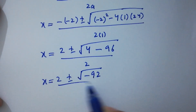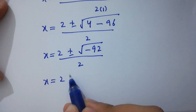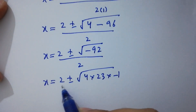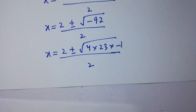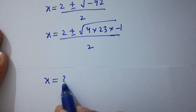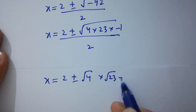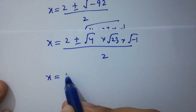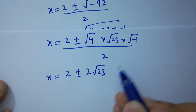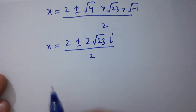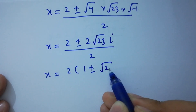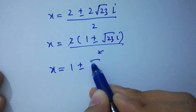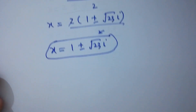We have 2 plus or minus square root of minus 92 over 2. This simplifies as square root of minus 92 equals square root of 4 times 23 times minus 1. So x equals 2 plus or minus square root of 4 times square root of 23 times square root of minus 1 over 2. Since square root of 4 is 2 and square root of minus 1 is i, we get x equal to 2 plus or minus 2 times square root of 23 times i over 2, and the 2s cancel, giving x equal to 1 plus or minus square root of 23i.